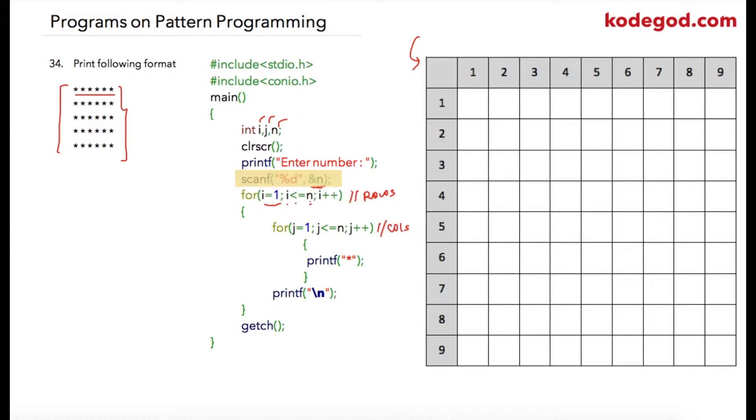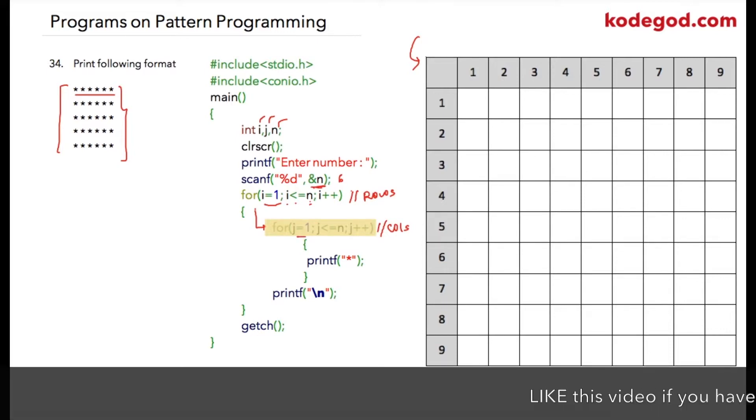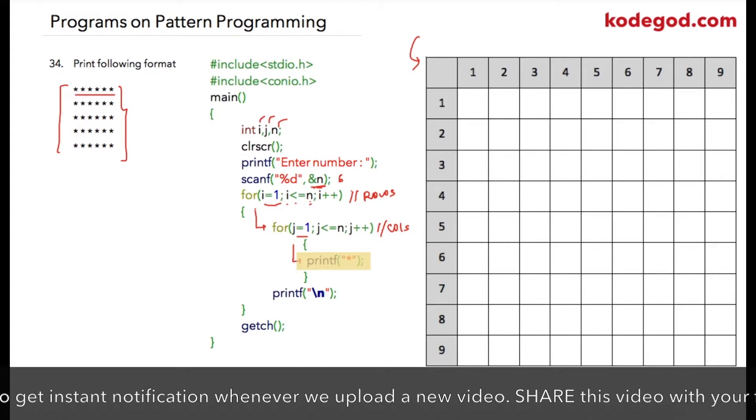Let us assume that the user has entered n as 6. So 1 is less than or equal to 6, which is a true condition, so the controller will enter inside the loop. And inside the loop my first statement is another for loop where I am initializing j equal to 1. And again j is less than or equal to 6, which is a true condition, so the controller will go inside the second loop and it will print my first star at this location.